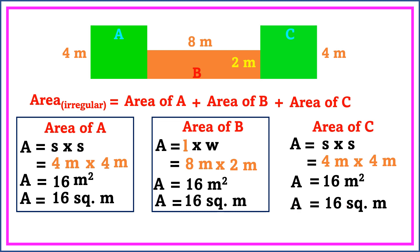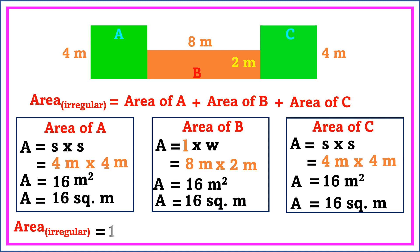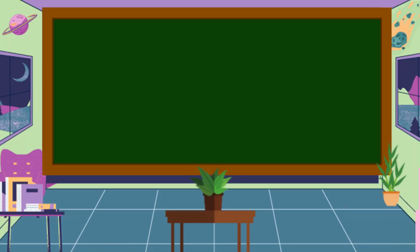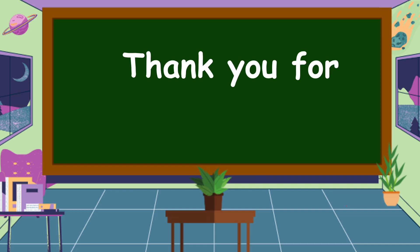To find the area of the irregular figure, we're going to add all the areas from A to C. We have 16 square meters plus 16 square meters plus 16 square meters, which is equal to 48 square meters. This is the area of this irregular figure. I hope you understand our lesson for today, and thank you for watching.